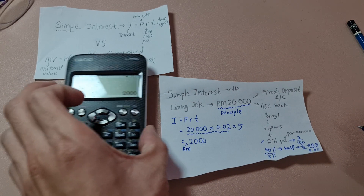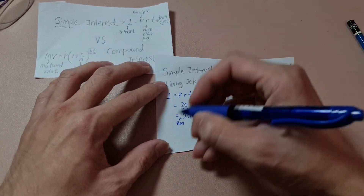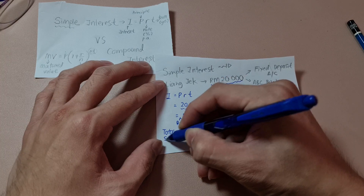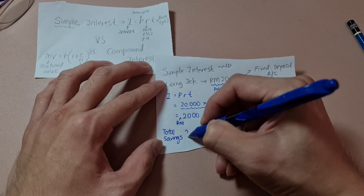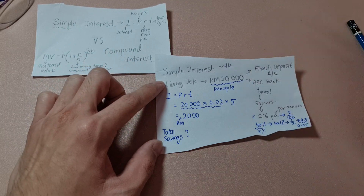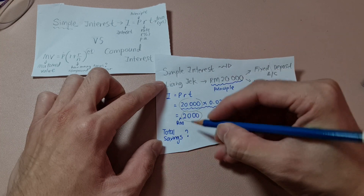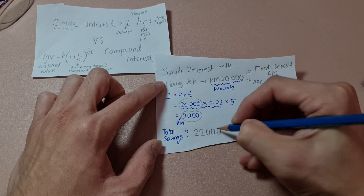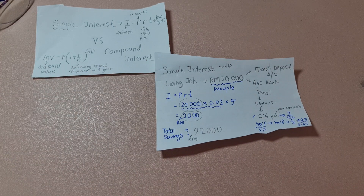Now everyone, if I say what is my total savings — after 5 years, total how much I have — it will be the 20K and I add this 2,000. So this is my total savings after 5 years. That's simple interest.